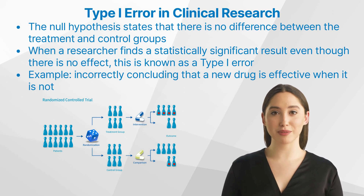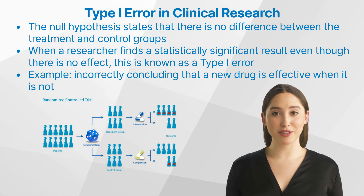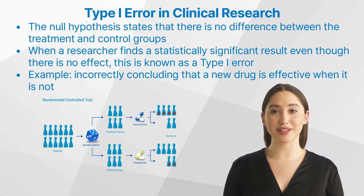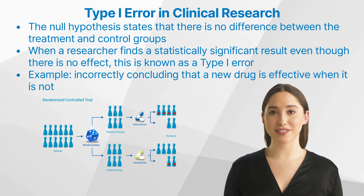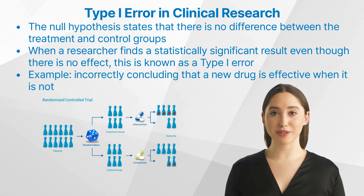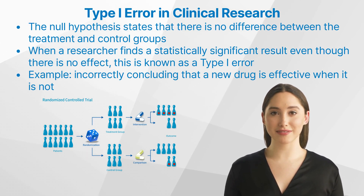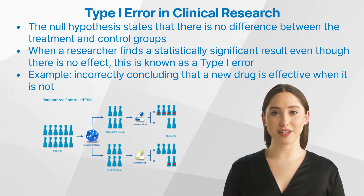When a researcher finds a statistically significant result even though there is no effect, this is known as a type 1 error — meaning the researcher has failed to accept the null hypothesis even though it is true. False positive results occur when the researcher incorrectly rejects the null hypothesis, which can lead to incorrect conclusions and be detrimental to making decisions about treatments, therapies, or interventions.